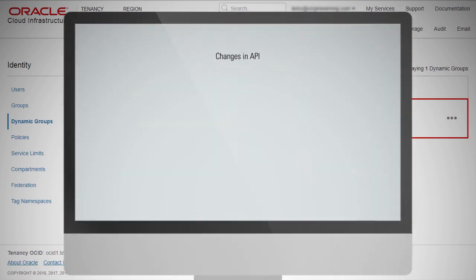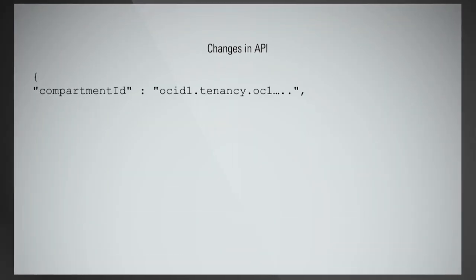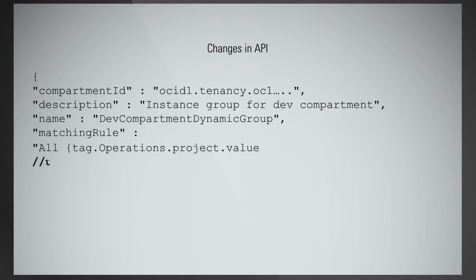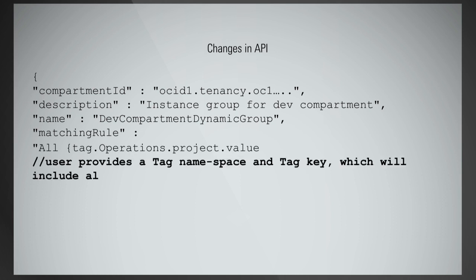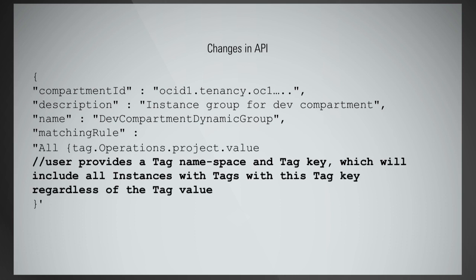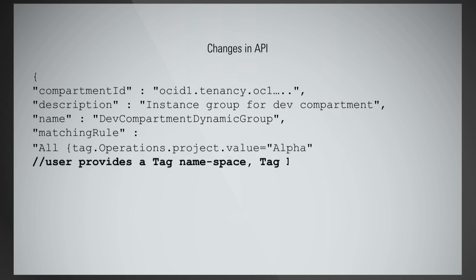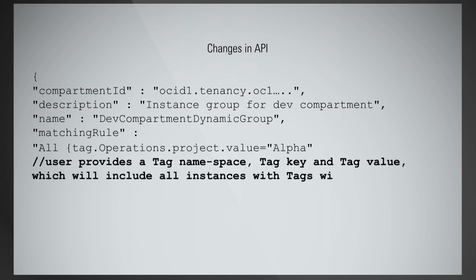The existing instance principal will have the following API. Now the user can use any of these combinations: TagNamespace and TagKey — the user provides a tag namespace and tagKey, which will include all instances with tags with this tagKey, regardless of the tagValue. TagNamespace, TagKey, and TagValue — the user provides a tag namespace, tagKey, and tagValue, which will include all instances with tags with this tagKey and tagValue.